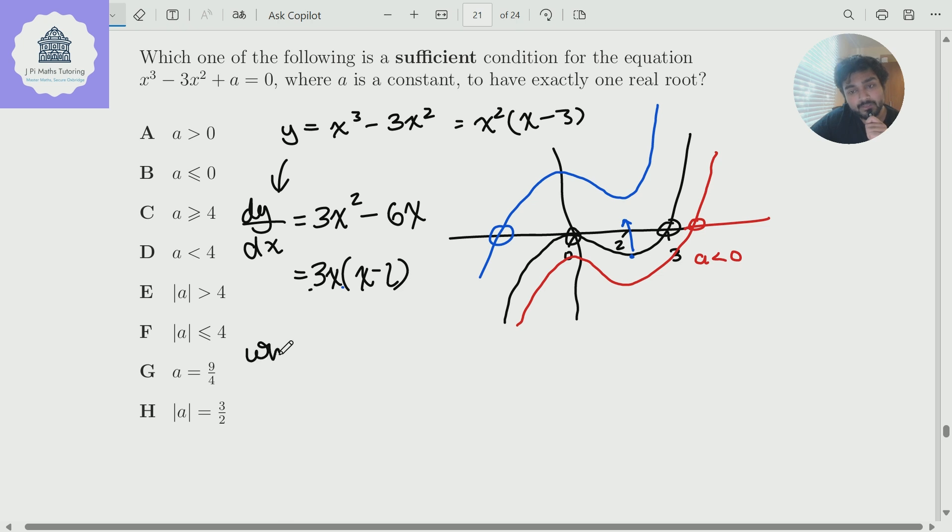Okay, so when x is two on the black curve, y is equal to two cubed minus three times two squared, which is minus four. And so that means that this y value here, it's a little bit difficult to see, but that would be minus four, like so.